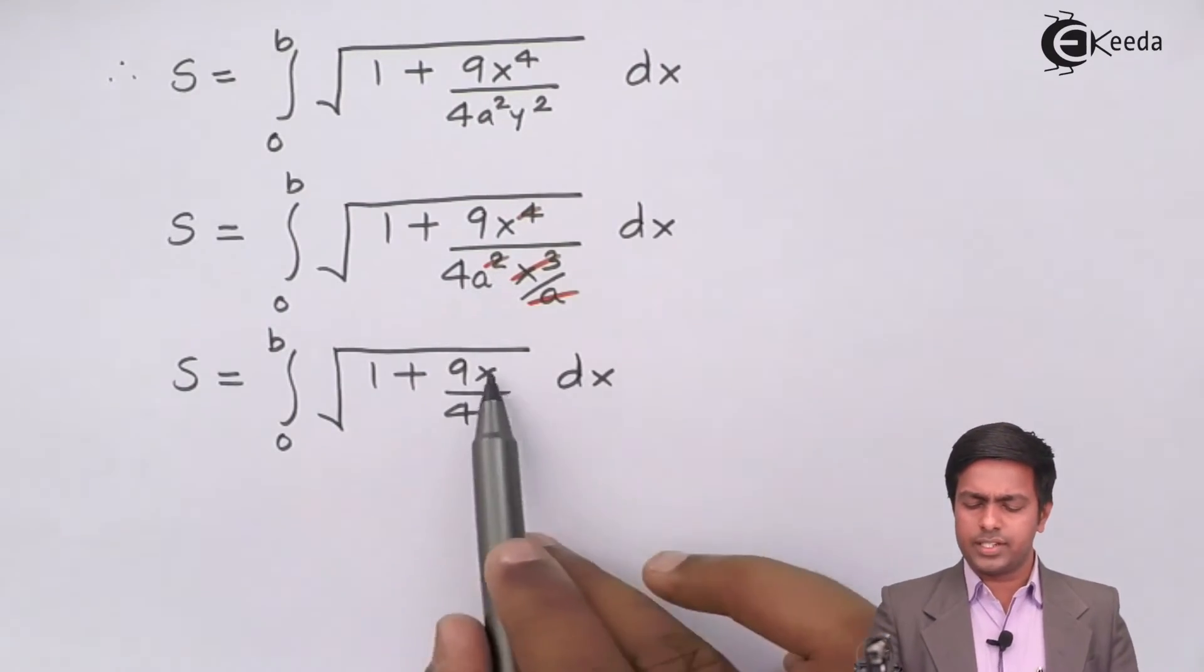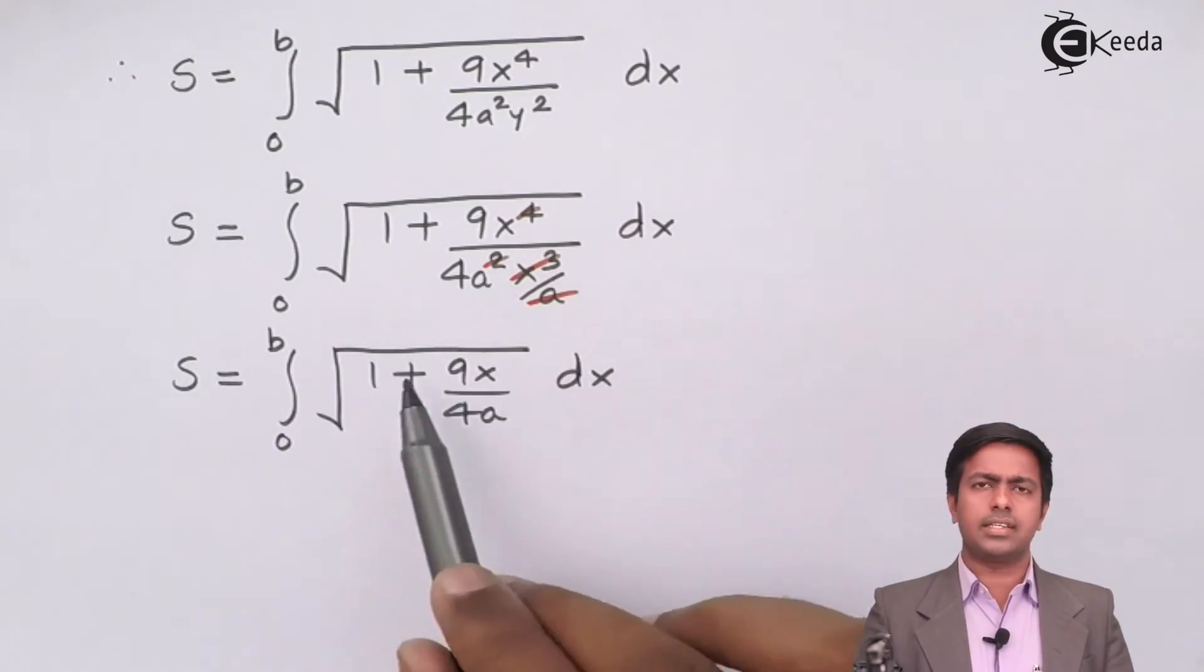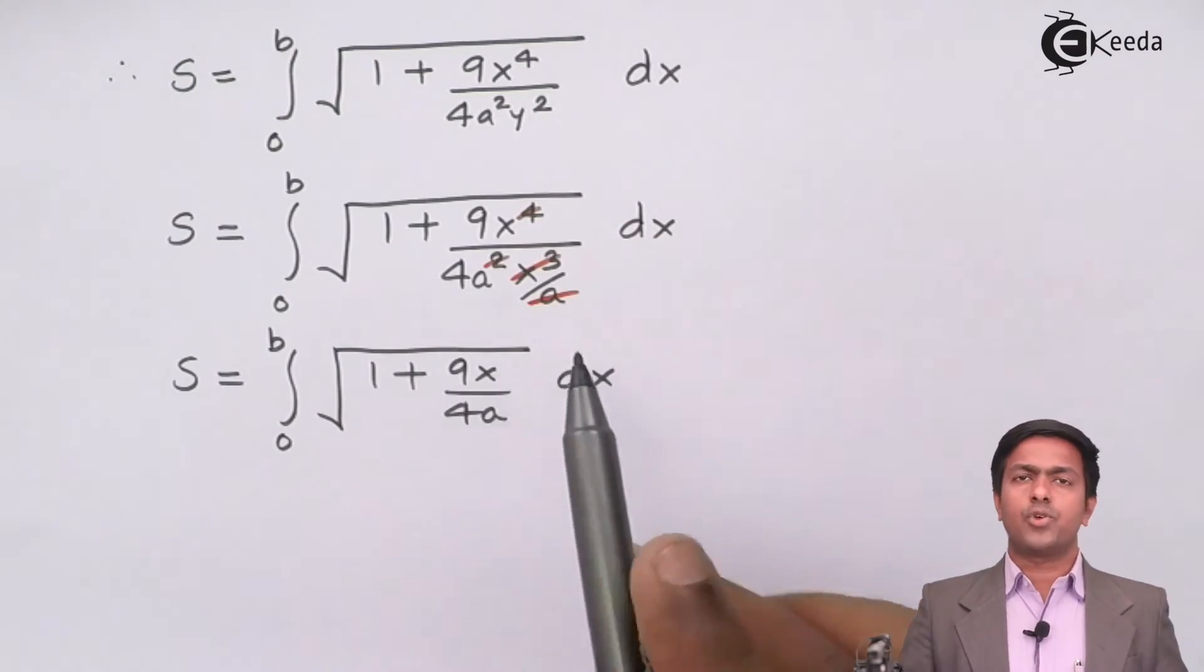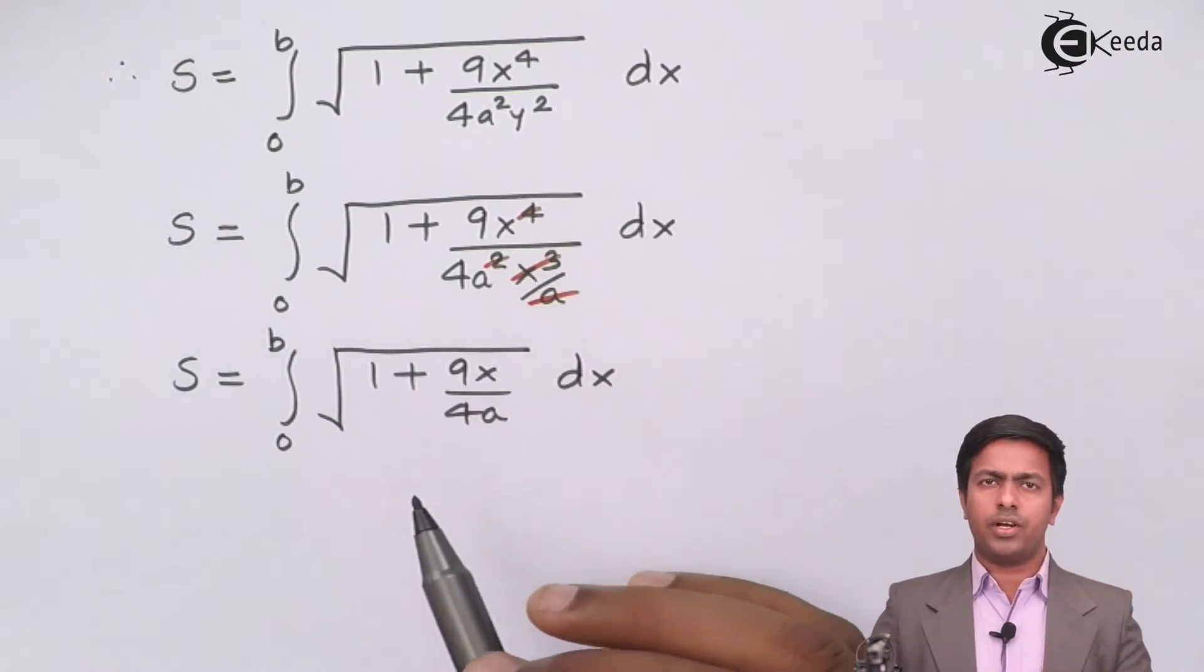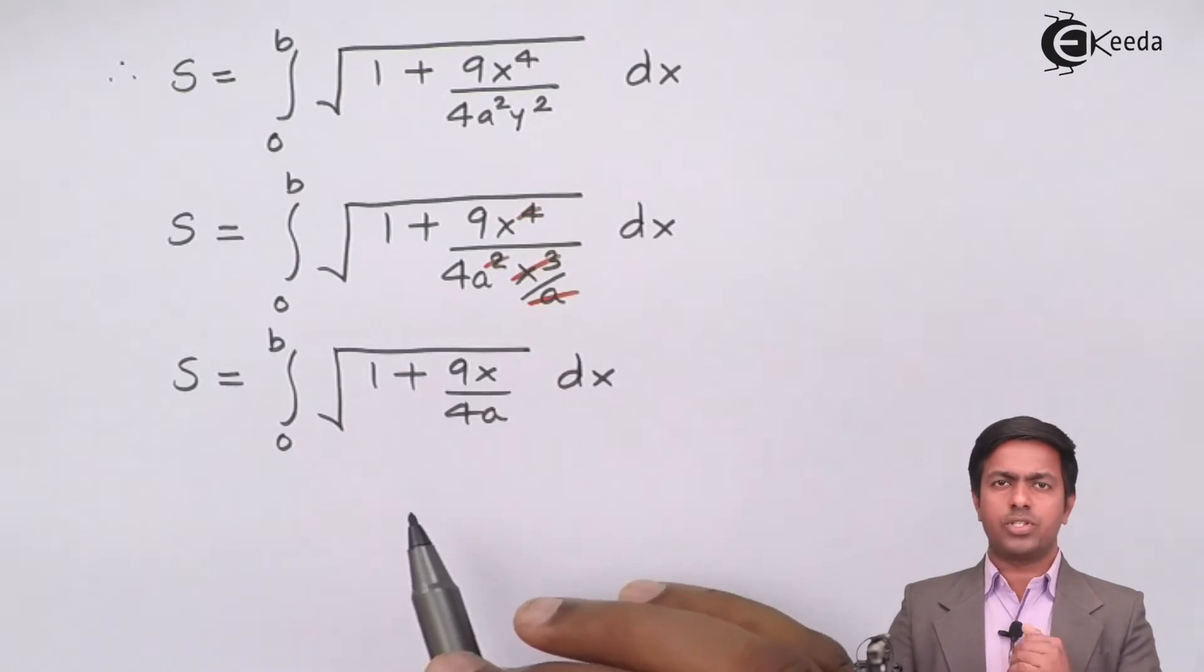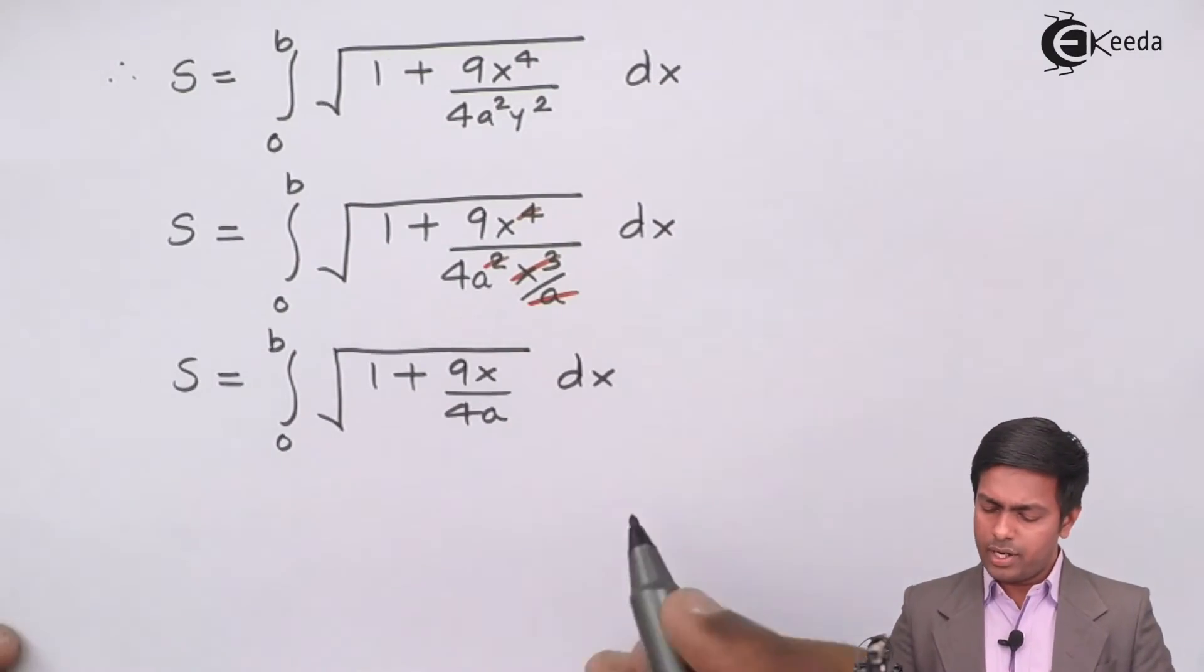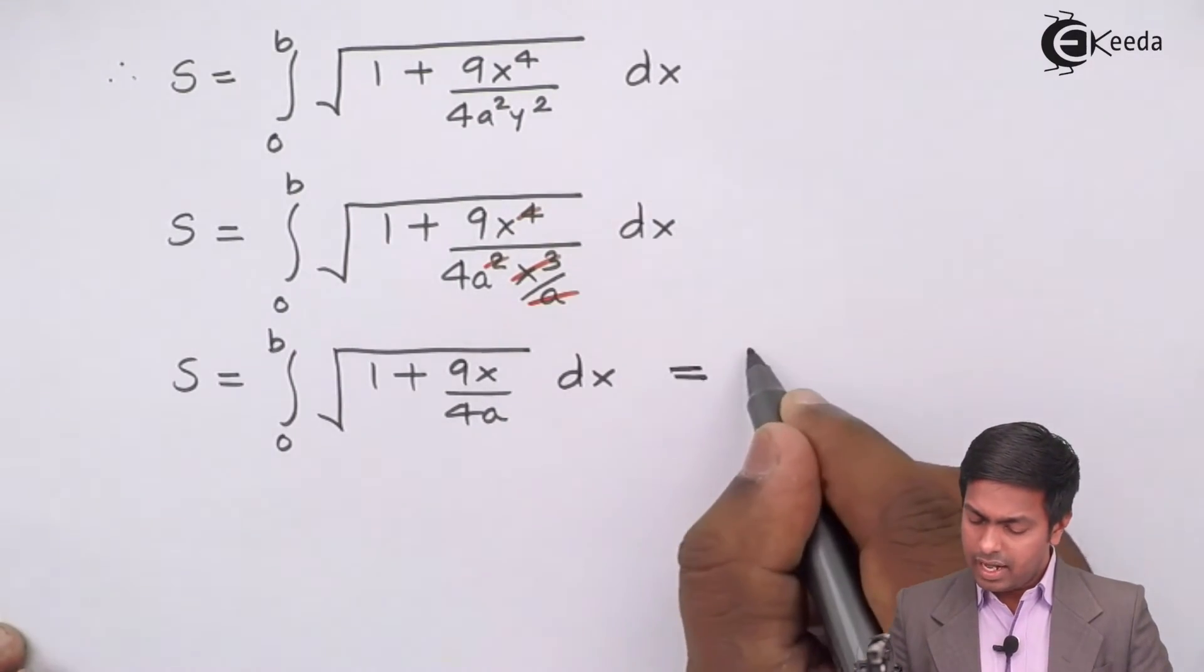Now the question is how to find out the integration. So it's simple. Here this is the function of x and root is nothing but raise to half. So we have a formula of integration for x raise to n which is x to the power n plus 1 divided by n plus 1. I will use that formula. So by that formula here I will say the answer is